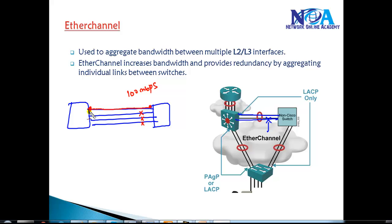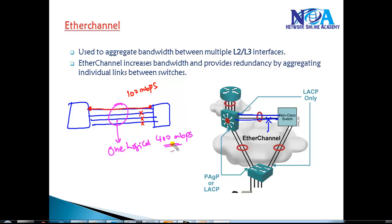The requirement is to use all four links for forwarding traffic. We are not going to disable spanning tree, but we can combine these multiple links into one single logical link. We present to spanning tree that these are not four links, but actually one logical link at a speed of 400 Mbps. All four links will be forwarding traffic without any blocking ports, and it will not create any loops. This method is called EtherChannel.